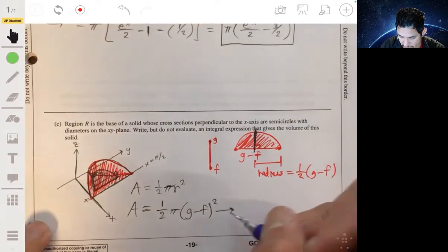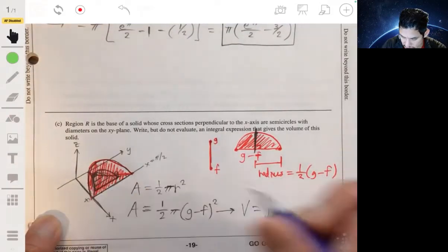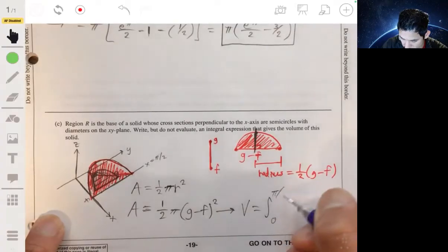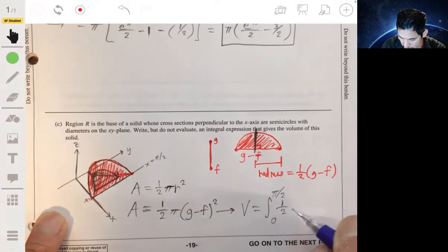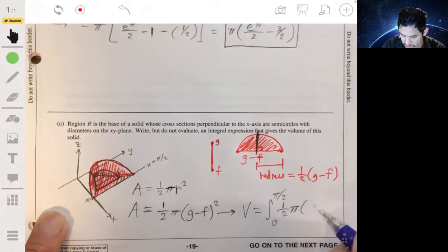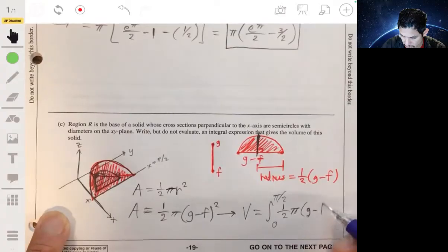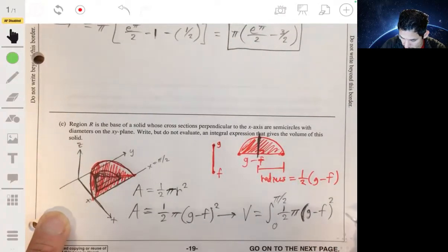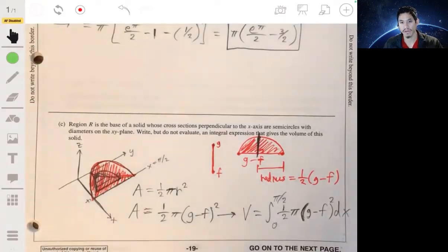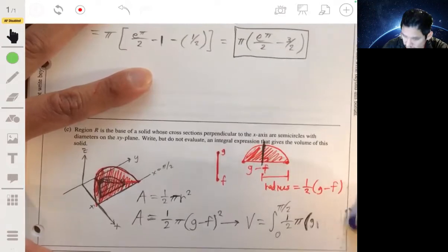So to generate that, our volume would be the integral from 0 to π/2, the integral of one half times π, G minus F squared. All that squared. Make sure you put the squared in there, dx. Or let me write G(x) minus F(x).